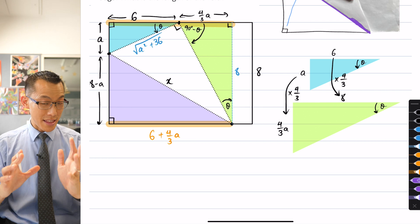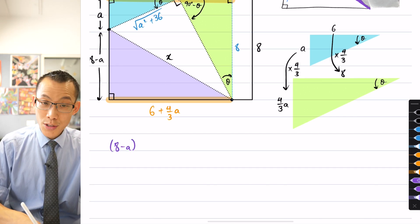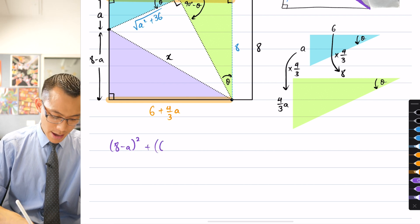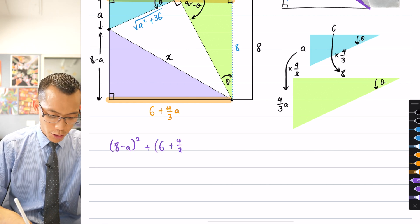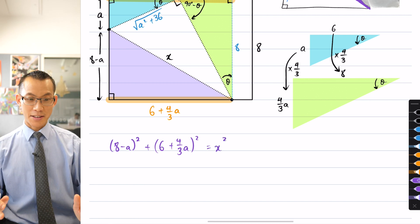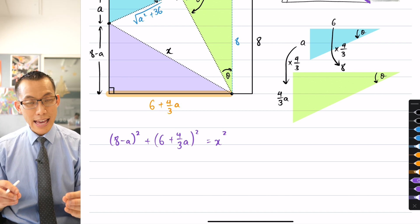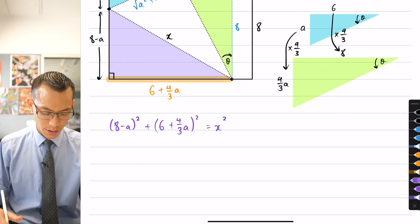Alright, so what we're going to do is in this right angle triangle, I can say that 8 take away A squared, there's one shorter side, and 6 plus 4 thirds A squared, there's the other shorter side, is equal to X squared. So that's really great. I've got now a relationship between the A's and the X's and that's going to help me solve this.